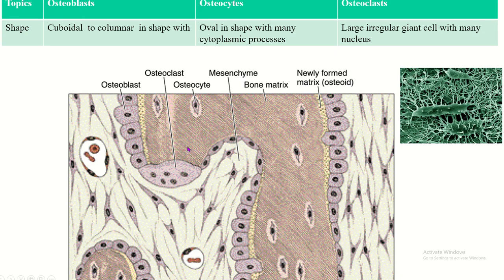The shape of the bone cell. Osteoblast has a cubital to low columnar shape. The osteocyte is found within the bone matrix and is an oval-shaped cell with many cytoplasmic processes. The osteoclast is a large irregular giant cell with many nuclei.